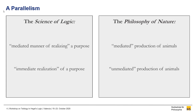I will try to show this by pointing to a parallelism between the Science of Logic and the Philosophy of Nature. In the Science of Logic, Hegel distinguishes between a mediated manner of realizing a purpose and an immediate realization of a purpose. And in the Philosophy of Nature, he distinguishes between a mediated and an unmediated production of animals. I want to show that Hegel in both contexts talks about external purposiveness.